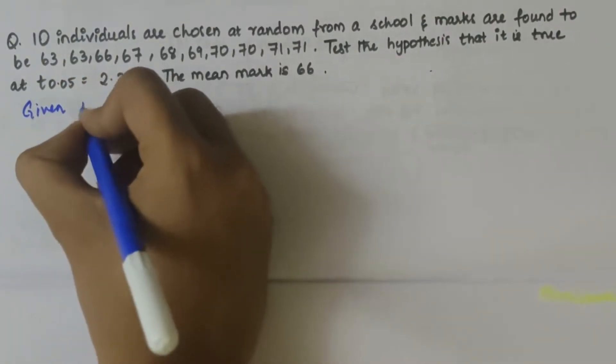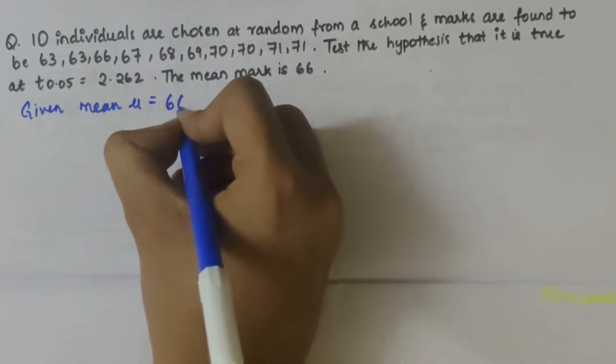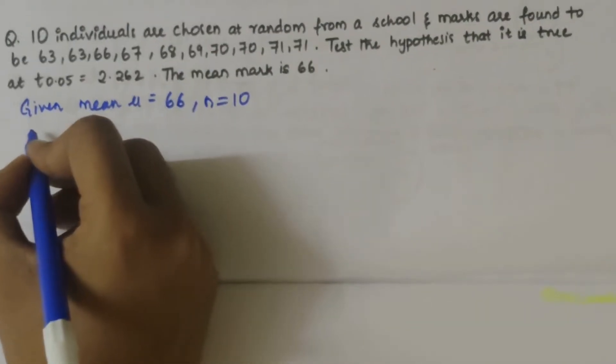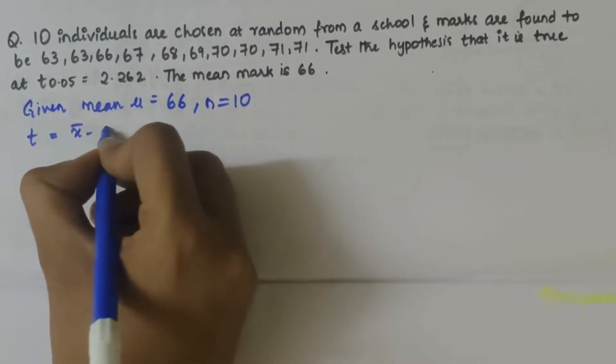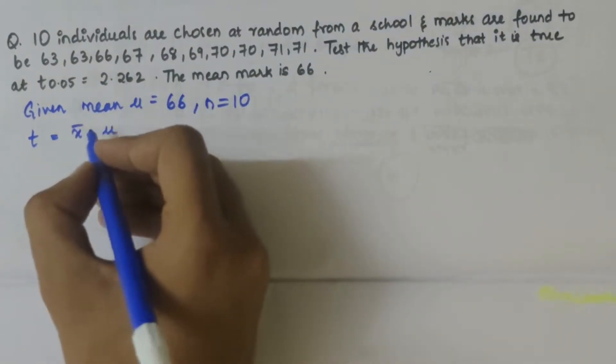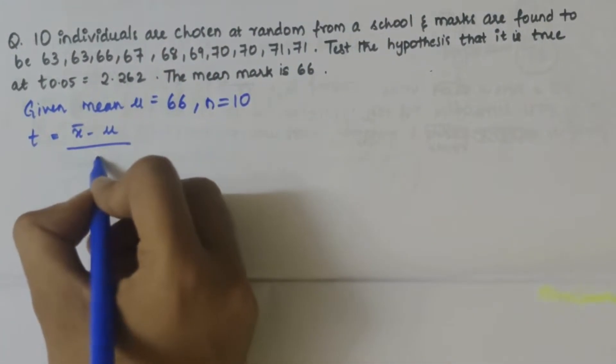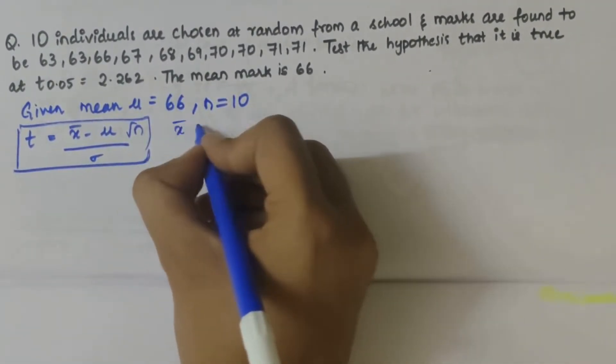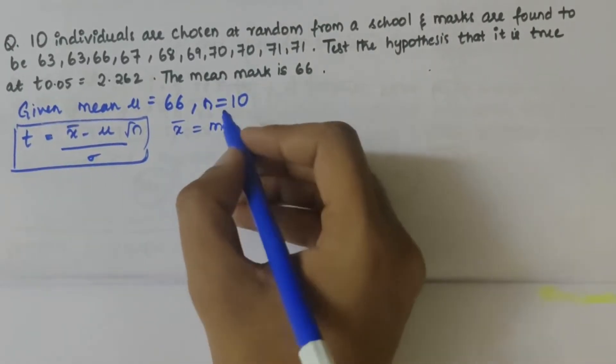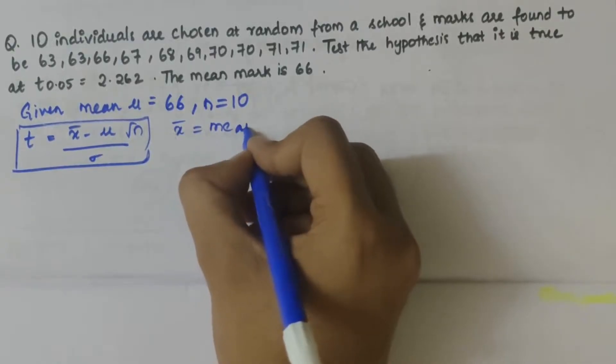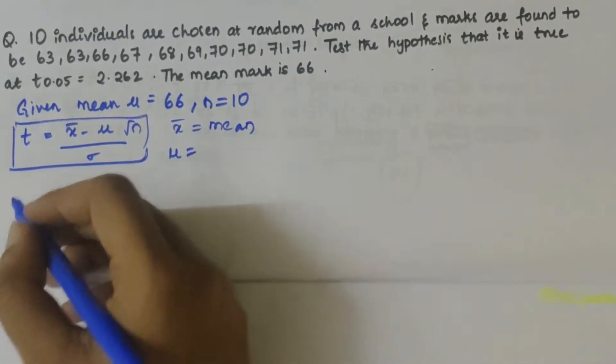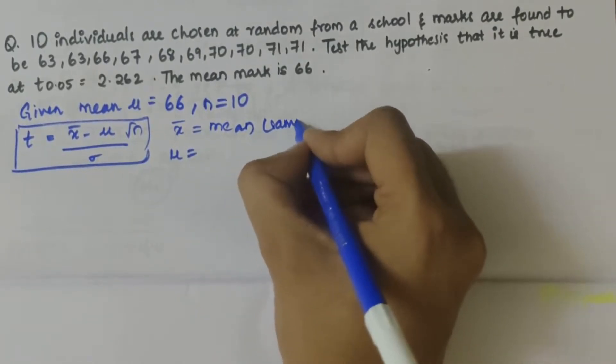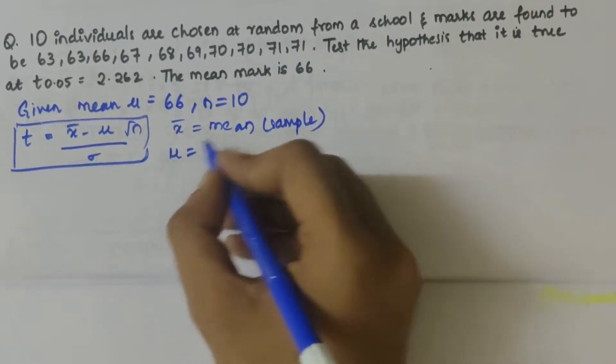First let's write given that mean mu equals 66 and n value is 10. Let's write the formula: t equals x̄ minus mu by sigma into root 10. Here x̄ is the sample mean and mu is the population mean value given.